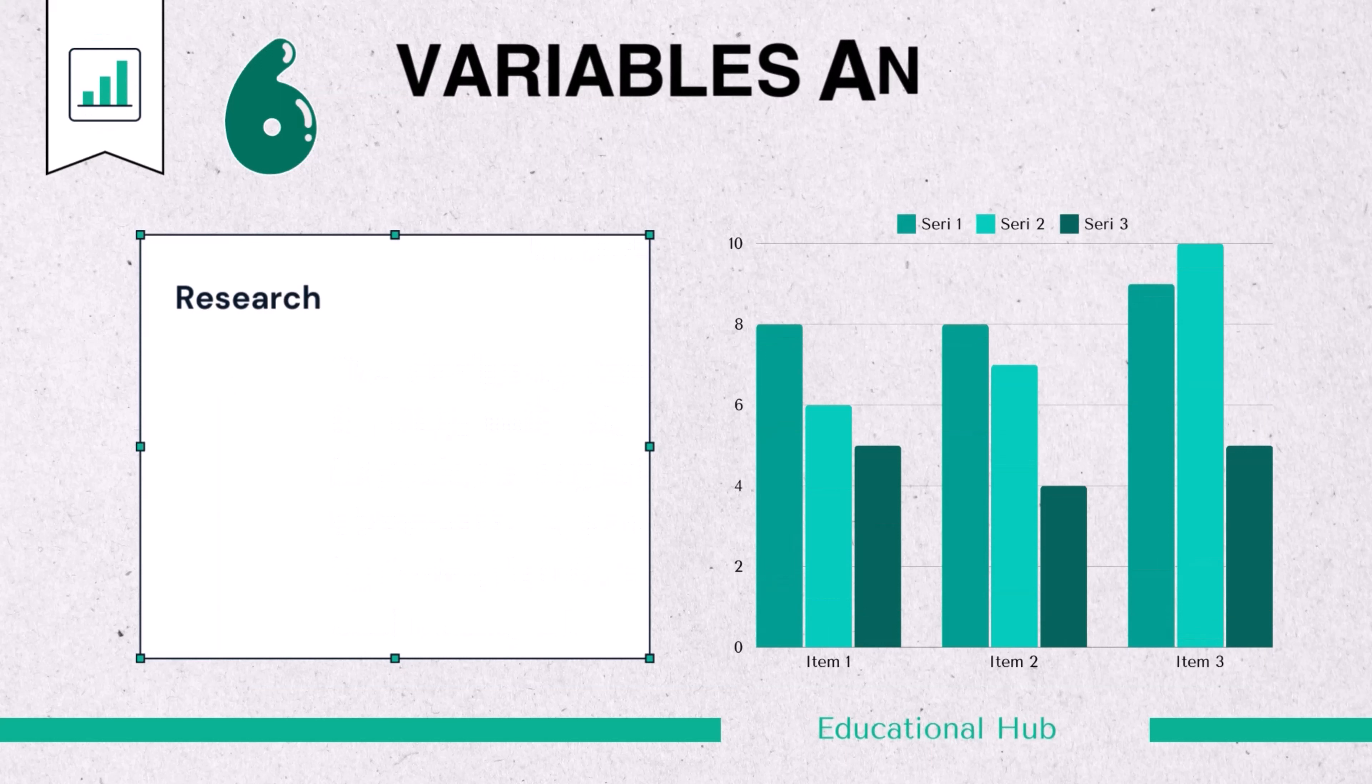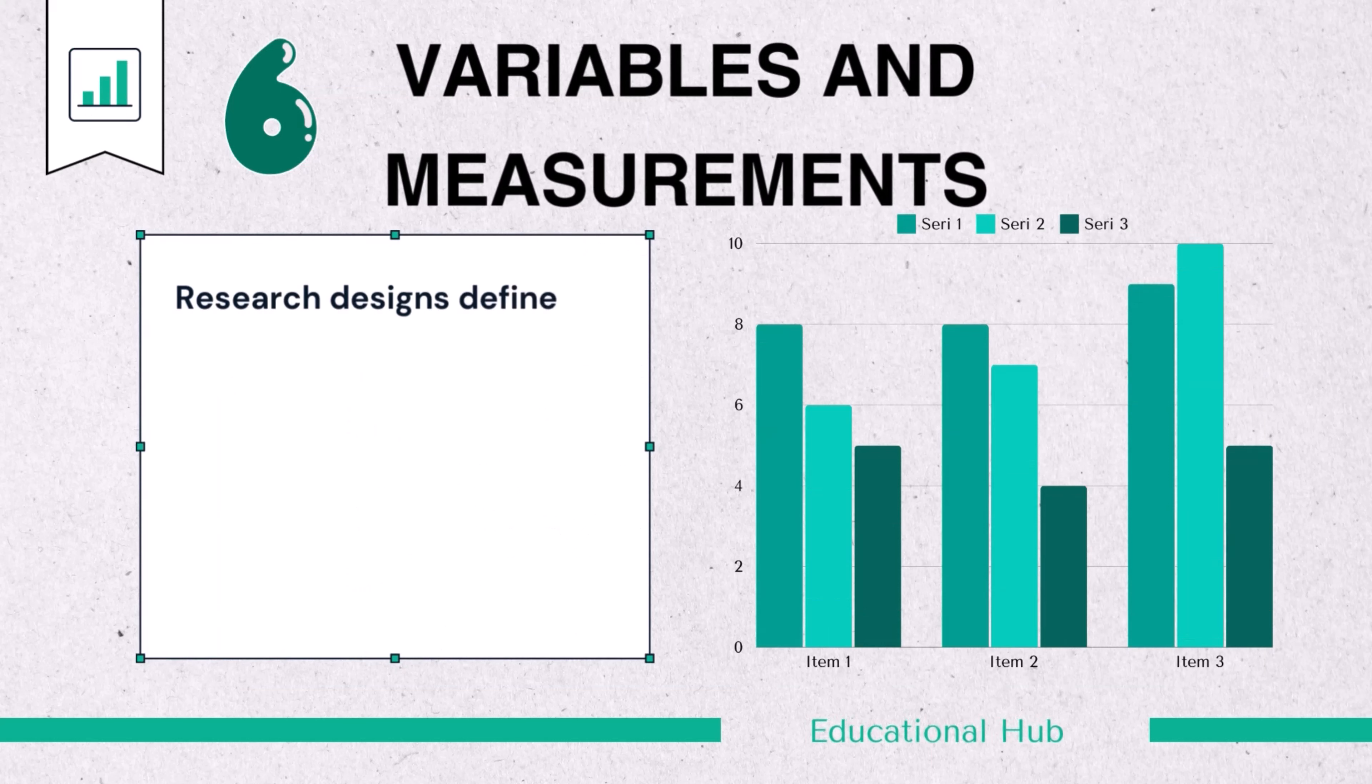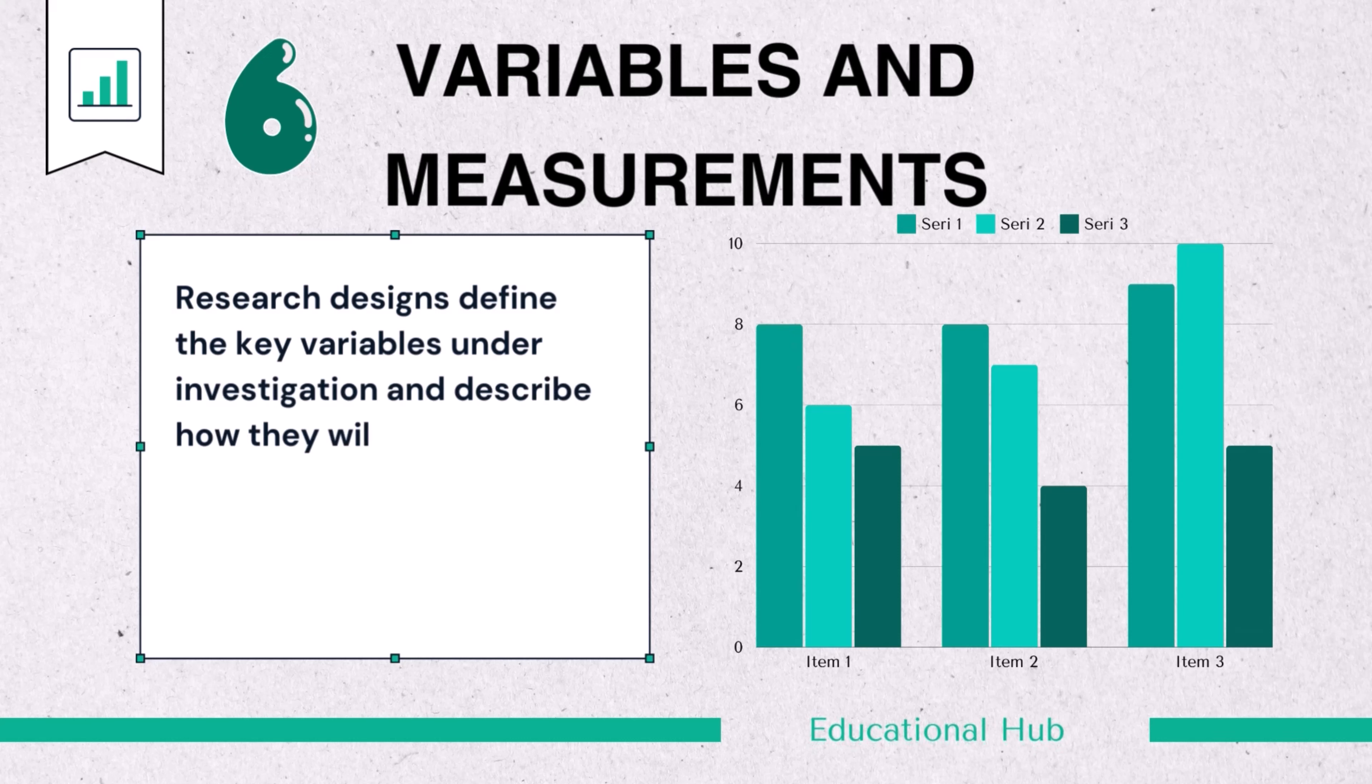6. Variables and measurements. Research designs define the key variables under investigation and describe how they will be measured or operationalized. This includes selecting appropriate scales, instruments, or metrics.